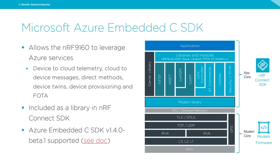Moving on to the Microsoft Azure Embedded C SDK: this allows the NRF9160 to leverage Azure services, including device-to-cloud telemetry, cloud-to-device messages, direct methods, device twins, device provisioning, and FOTA. It is included as a library in NRF Connect SDK. Azure Embedded C SDK version 1.4.0-beta.1 is supported — see the documentation for more information.